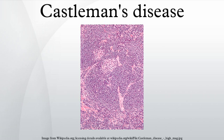Castleman disease, also known as giant or angiovascular lymph node hyperplasia or lymphoid hamartoma, is a group of uncommon lymphoproliferative disorders that share common lymph node histological features that may be localized to a single lymph node or occur systemically. It is named after Benjamin Castleman.